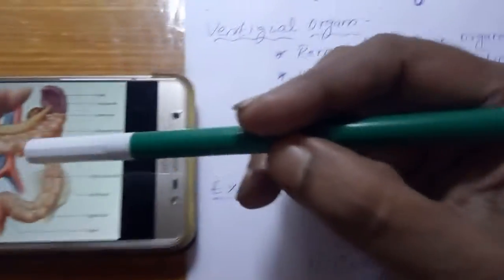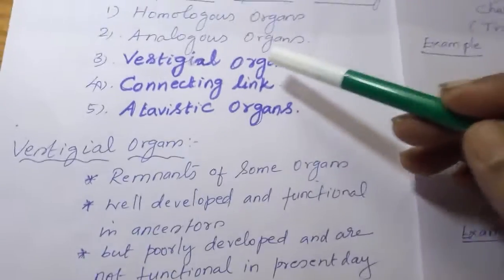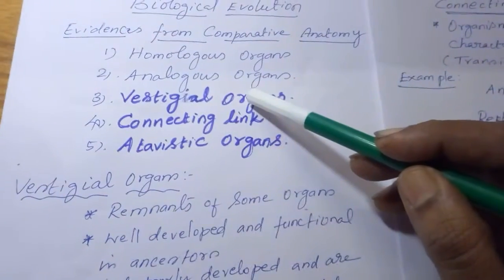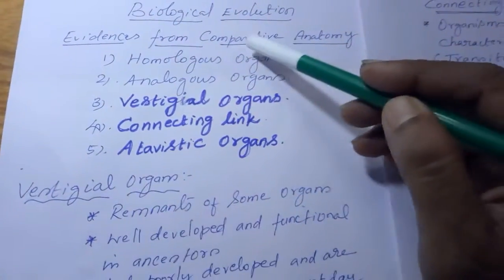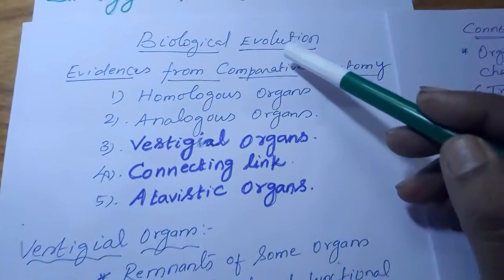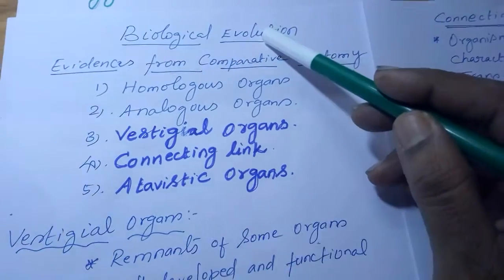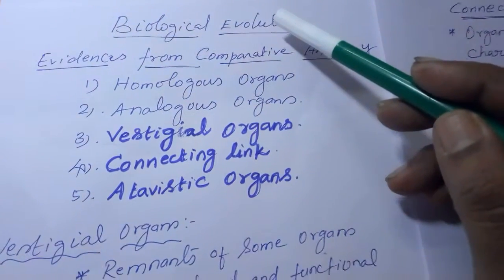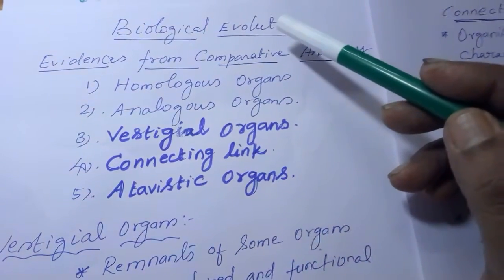Now, what is a vestigial organ? Vestigial organs are grouped under evidences for comparative anatomy, which supports biological evolution. Biological evolution is the evolution of an organism from a pre-existing organism by acquiring new traits adopted to new environmental conditions.